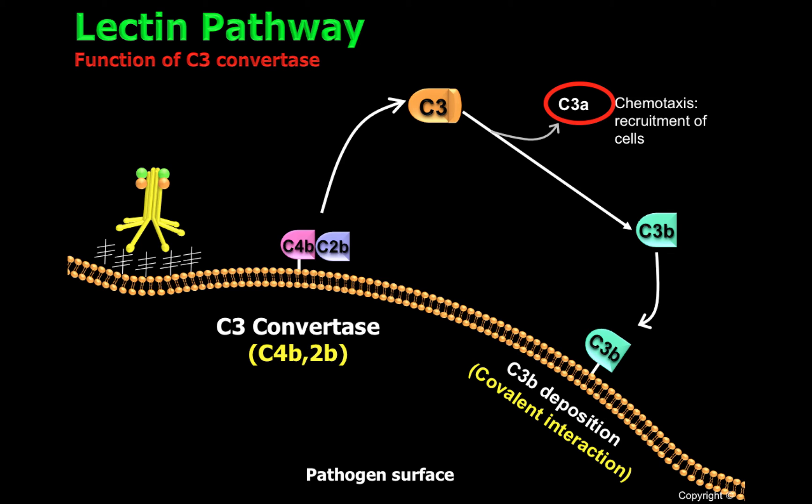The C3 convertase C4B-C2B will clip many molecules of C3, and therefore many molecules of C3B will be deposited on the cell's surface. Since C3B can be recognized by neutrophils and macrophages and help in the process of phagocytosis, C3B is considered an opsonin, which is important in a process called opsonization.